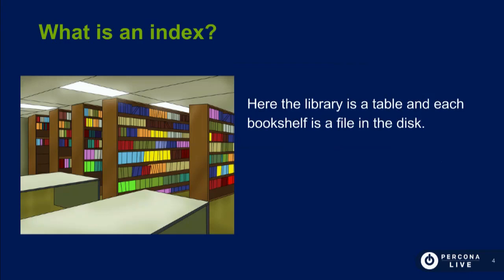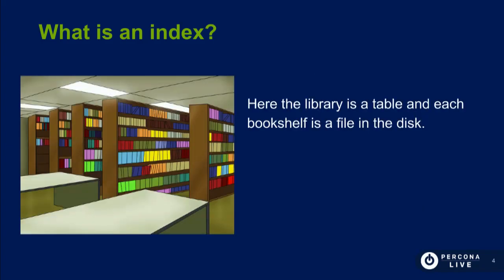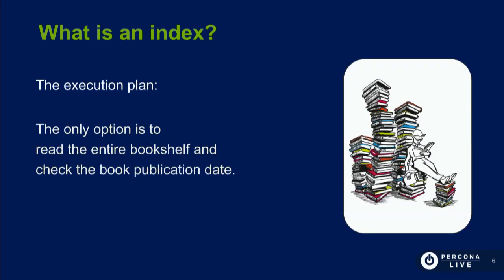What's an index? I'm using a library to simulate my database. The bookshop here is my collection or table. We have the primary key — organized by colors — so it's organized by the primary key right now. But what happens if we ask the database to look for something different? Could you find all the books written in 1977 and 1978? There's no order for that. What the database does when we ask this question and we don't have an index is read all the books to filter which ones to return. This is called a collection scan.